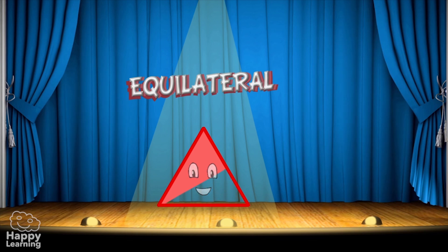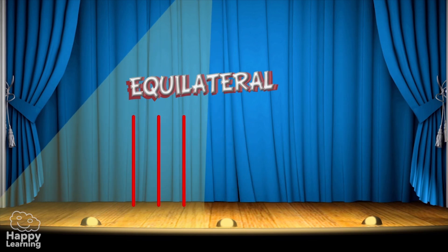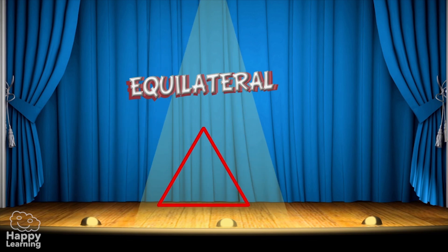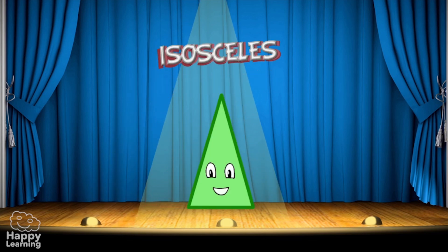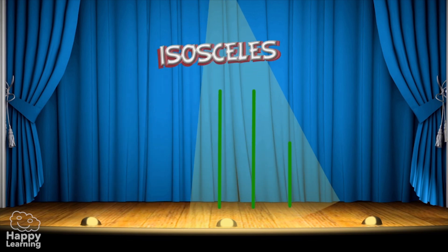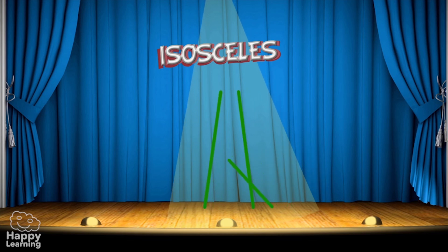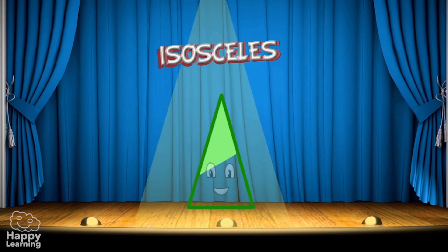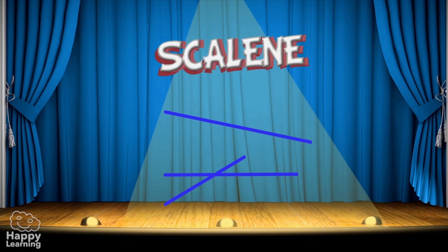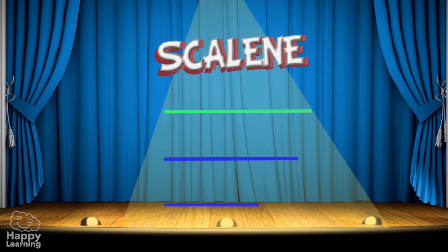An equilateral triangle — all three sides are equal in length. An isosceles triangle — two sides are the same length and one is different. And a scalene triangle — all three sides are different in length.